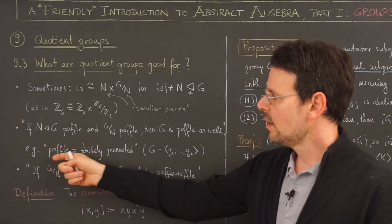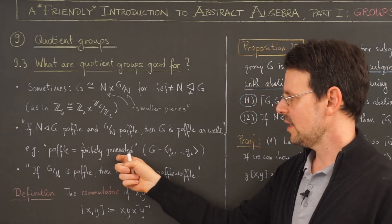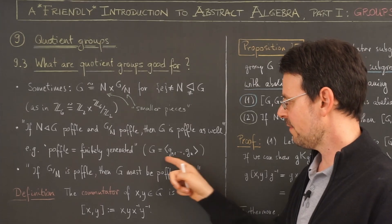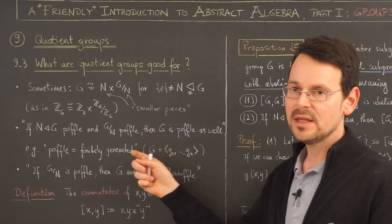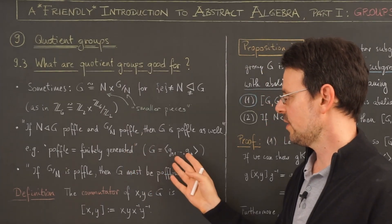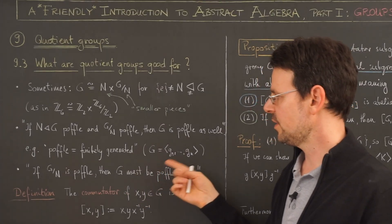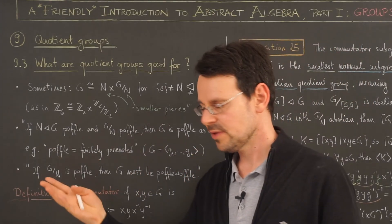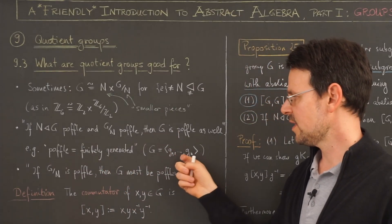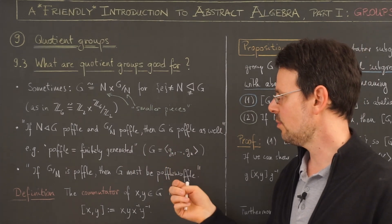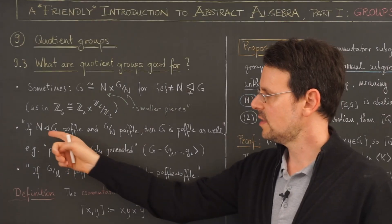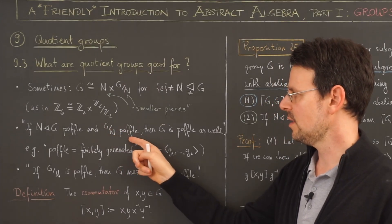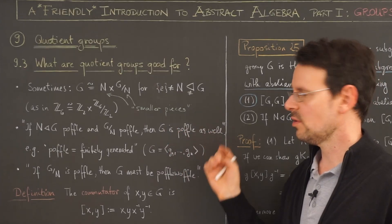Let me give you an example. If POFL means being finitely generated, which means that G can be written as the group generated by a finite number of its elements. In our study of mostly finite groups this is not very interesting, since every finite group is finitely generated. But it's more interesting when you study infinite groups to find a finite set of generators. There is a proposition that says: if a normal subgroup of G is finitely generated and the quotient G mod N is also finitely generated, then G itself is already finitely generated.